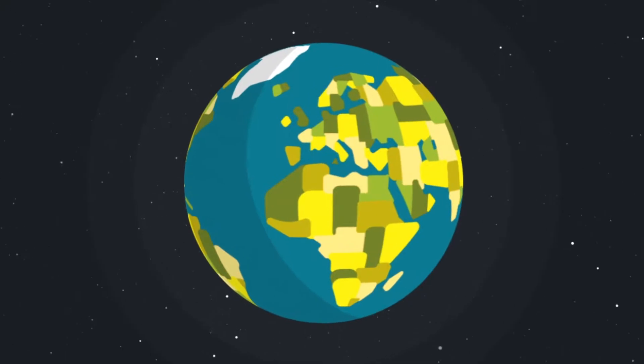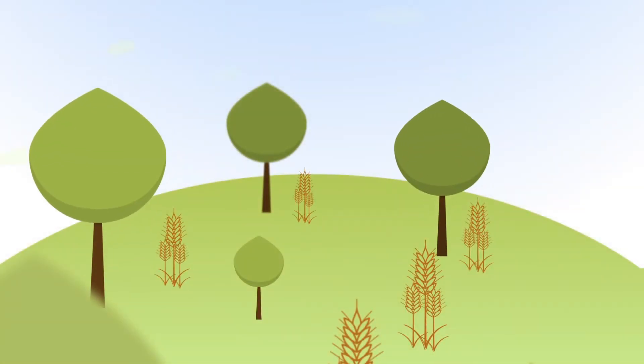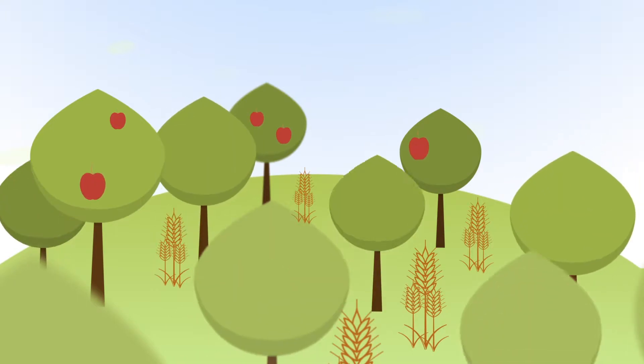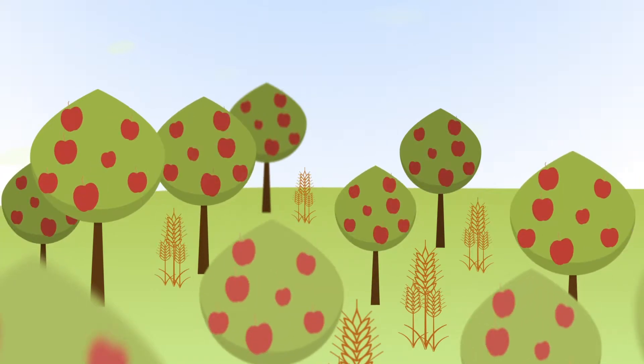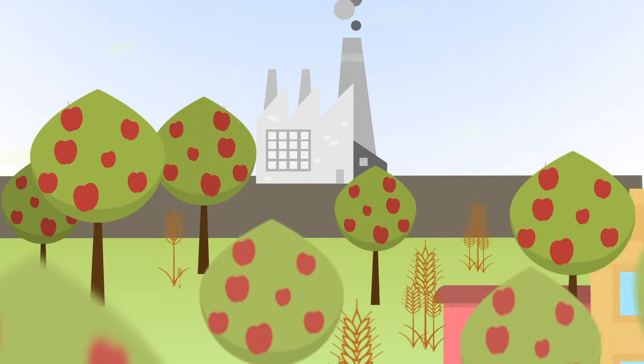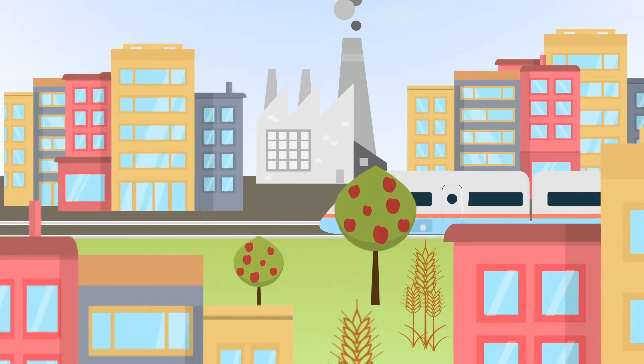The agricultural sector is facing three major challenges. Produce twice as much foodstuff by 2050 in order to feed an ever-increasing population, on decreasing arable lands, and with accelerating climate change.